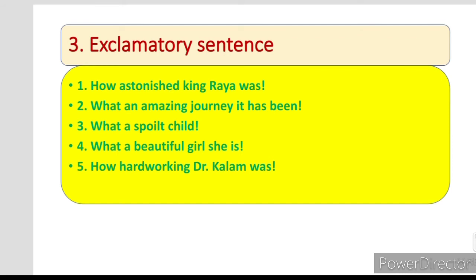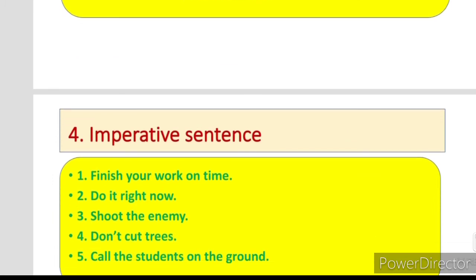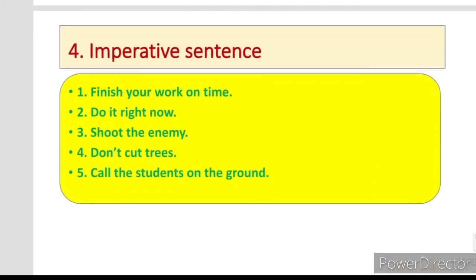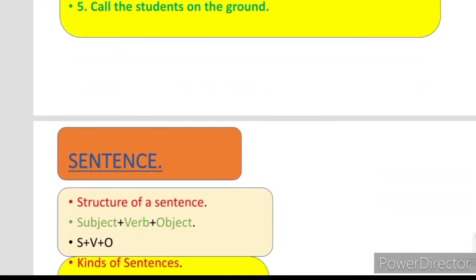Fourth type is imperative sentences. Finish your work on time, apna kam waqt par khatam karo. Do it right now, ise abhi karo. Shoot the enemy, dushman ko khatam karo. Don't cut trees, darakht na kato. Call the students on the ground, tamam tulaba ko maidan par bulao. Imperative sentence jis qisam ki jumaley bayan kiye gaye hain ise samajh mein aata hai ke yeh hukmiya jumaley hain.